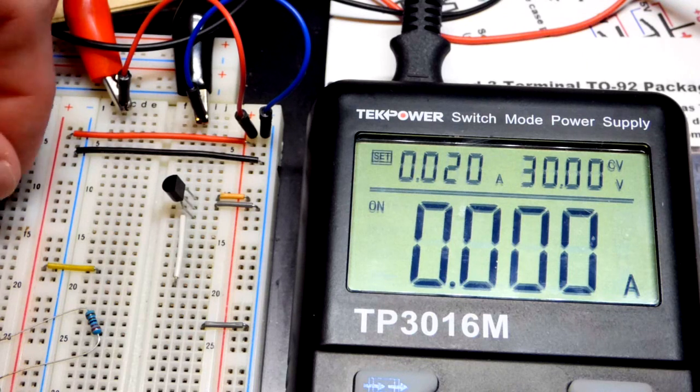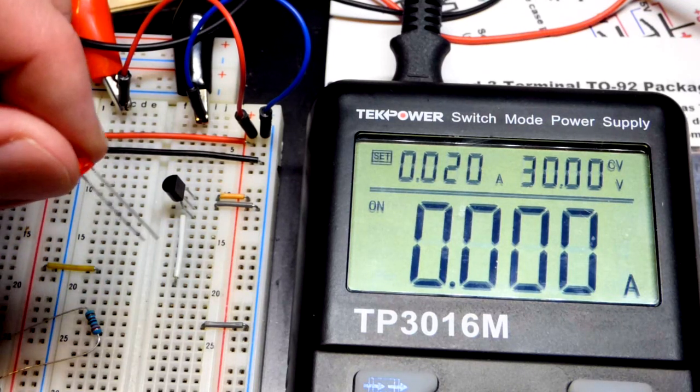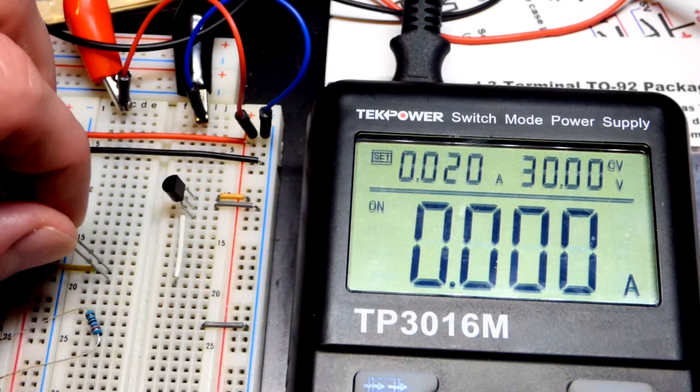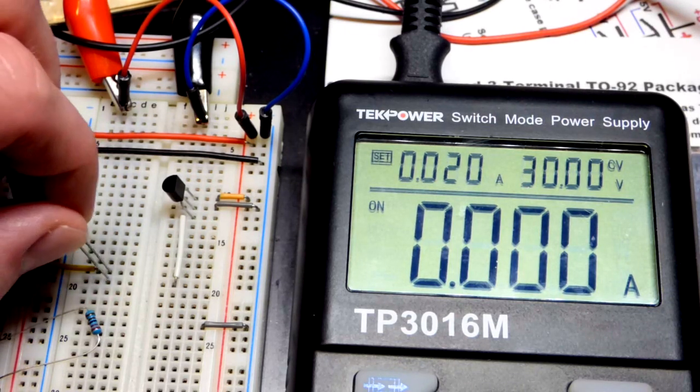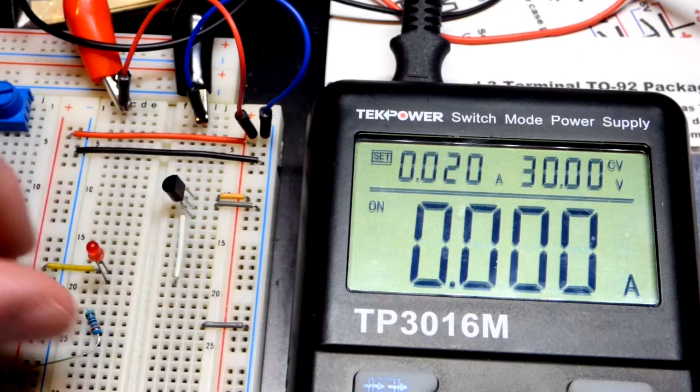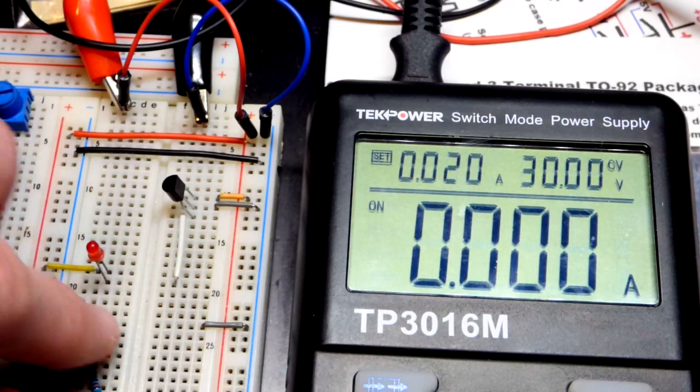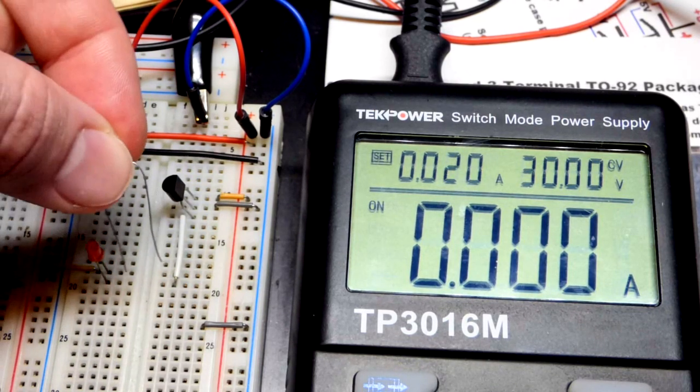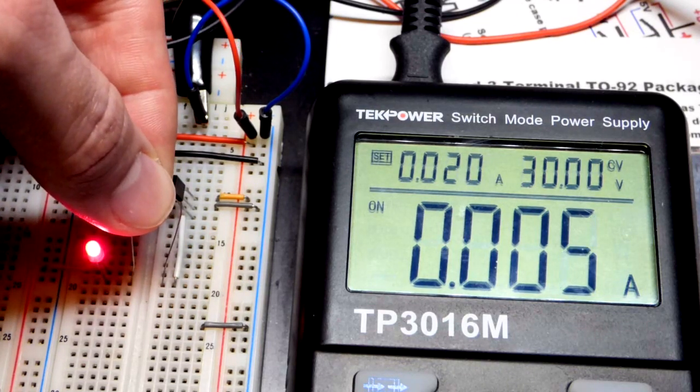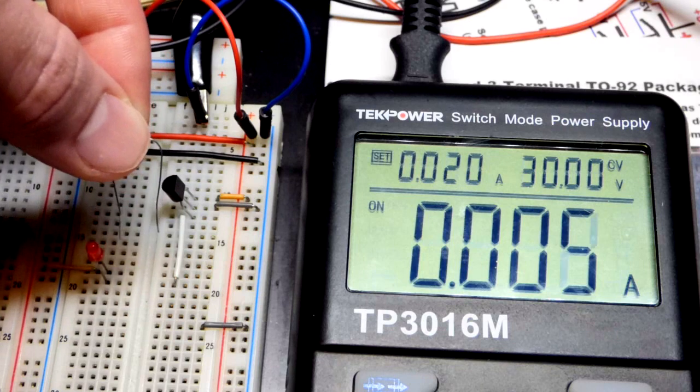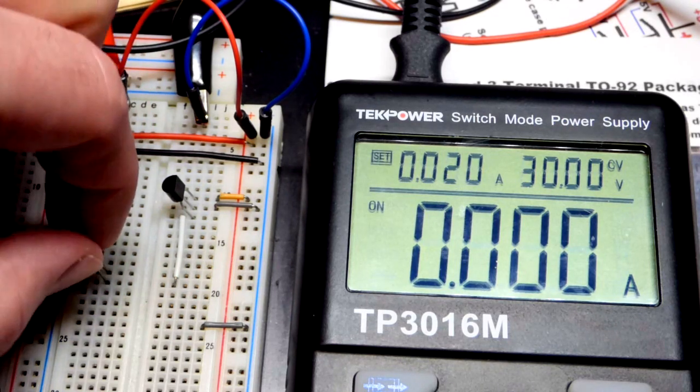Now we can change the load a little bit more. I'm going to take the LED here and plug it—long lead, the anode, to that jumper because it goes to the positive rail. Short lead, the cathode, down one spot. Now I'm going to complete the connection with the resistor over here. There you can see the LED lights up, and we got about 5 milliamps of current.